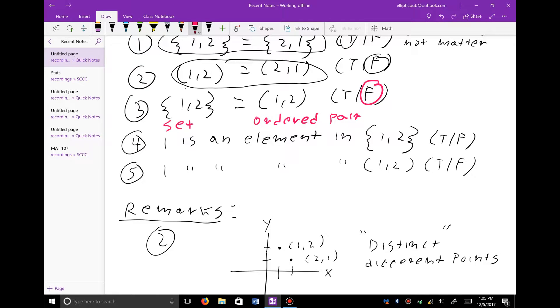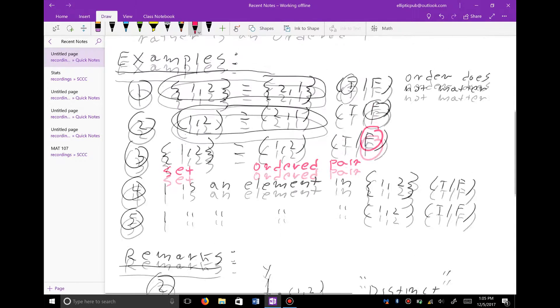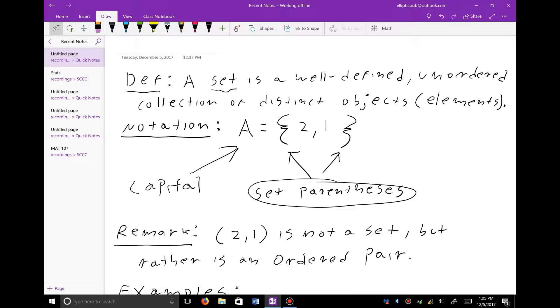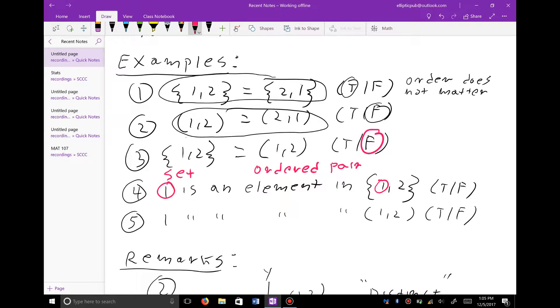Now we talk about elements being in sets. If you look at the definition here, a set is a well-defined, unordered collection of distinct objects, also known as elements. So we can speak of elements being in a set. This element is, in fact, in this set. So this is true.